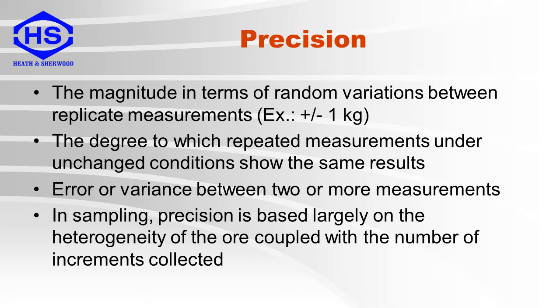Precision is the magnitude in terms of random variations between replicate measurements — for example, plus or minus one kilogram. It is the degree to which repeated measurements under unchanged conditions show the same results. It is also the error or variance between two or more measurements. In sampling, precision is based largely on the heterogeneity of the ore coupled with the number of increments collected.